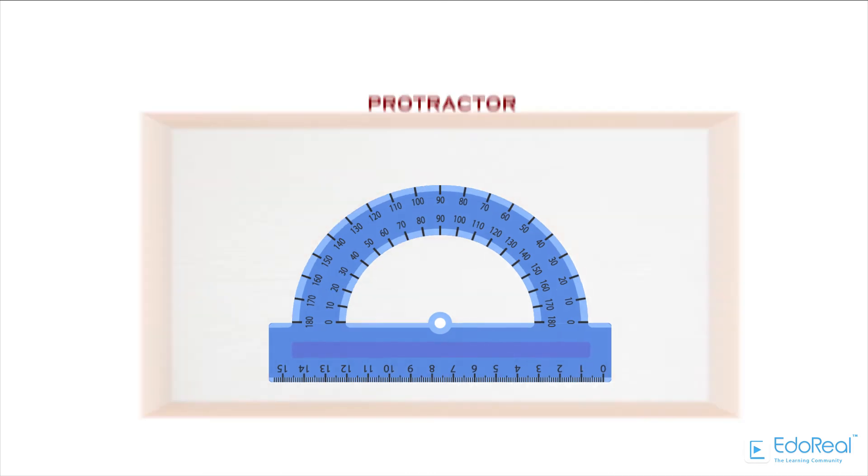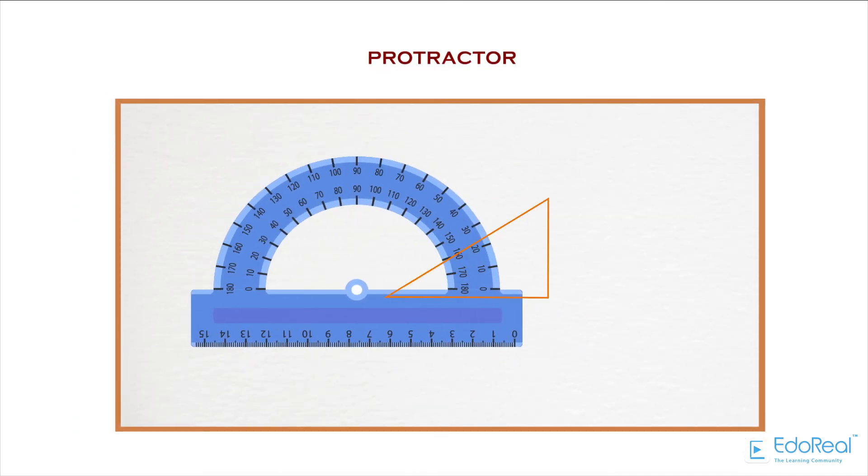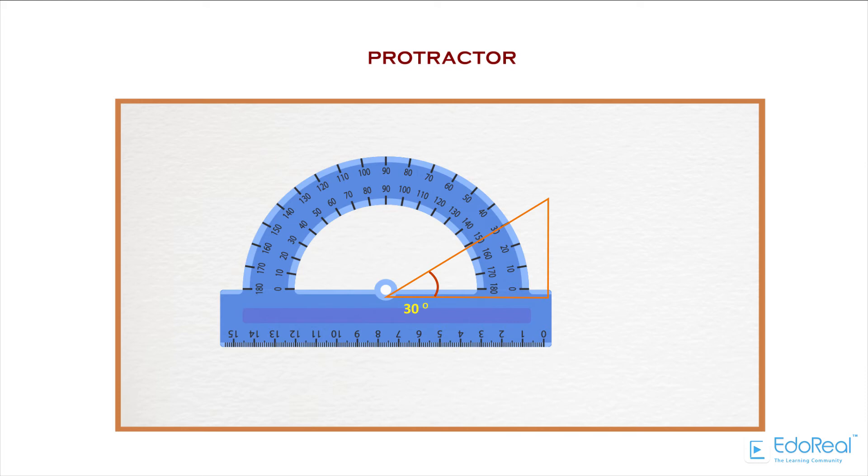Protractor is used to draw and measure the angles of lines in the drawing. It is in the shape of a semicircle and the edge of the semicircle part consists of reading with one degree accuracy. The bottom line joins the zero degree to the 180 degree. The center of this bottom line is marked as O or C, from which the angles are measured.